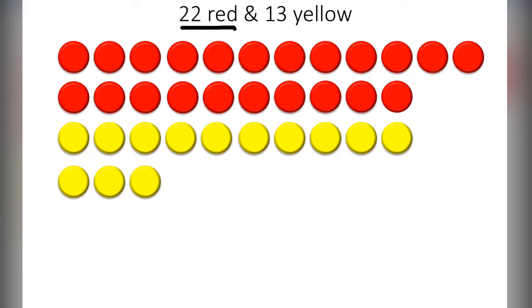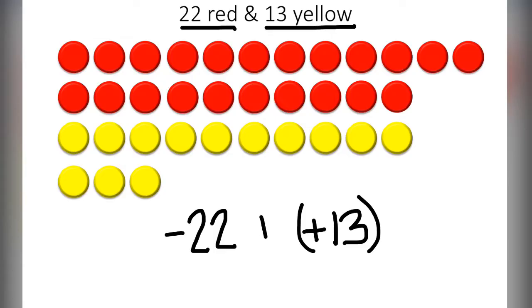Here we have 22 red counters and 13 yellow counters. Which looks like this. Positive 13 negative 22.